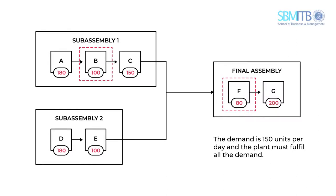Both machine capacities are less than the daily demand of 150 units. Resource B is a limited resource, failing to process the required 150 units daily, making it the limiting factor of Subassembly 1. Meanwhile, F's capacity is lesser than B's, so B and F are both bottlenecks, while F is the constraint. Therefore, B has little influence on the throughput of the plant. This distinction is really important: if we try to improve throughput through B, it will have little impact. However, if we improve F, this will automatically improve the whole plant.